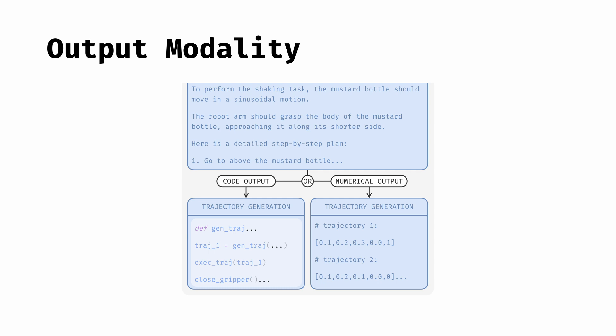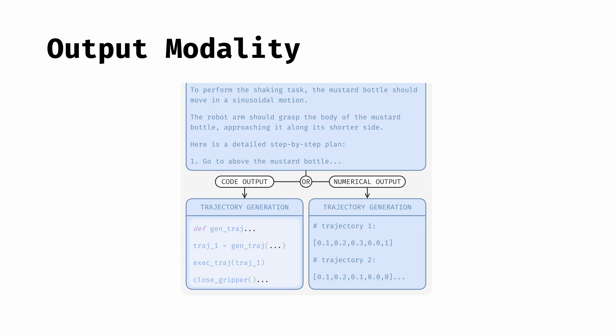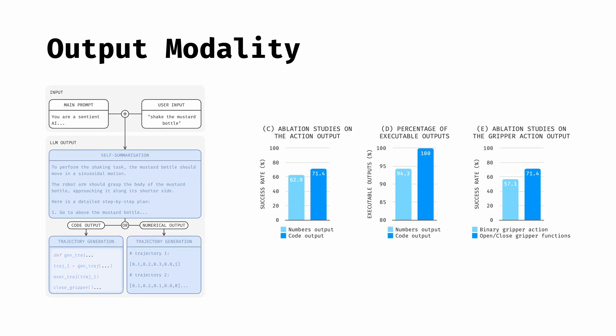The LLM then generates either code which computes and executes the trajectory directly on the robot, or a list of numerical values which need to be passed before being executed. Our investigation shows that outputting code for trajectory generation outperforms predicting the trajectory directly as an explicit list of numerical poses represented as language tokens. We also demonstrate that generating code as opposed to numerical tokens leads to executable outputs more often, with the former resulting in 100% of executable trajectories and the latter 94.3%.